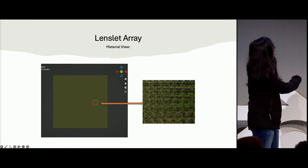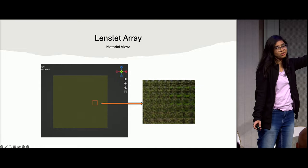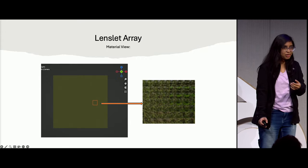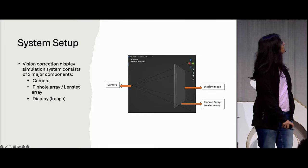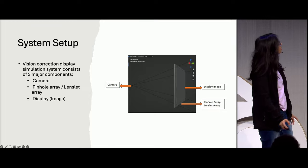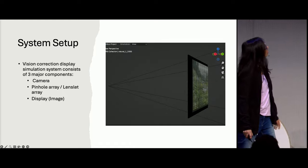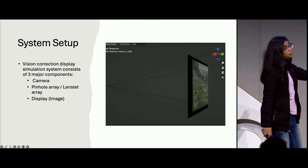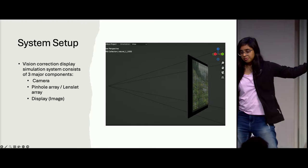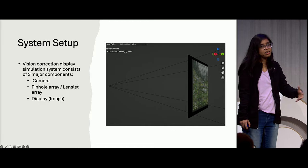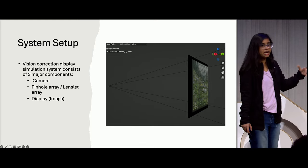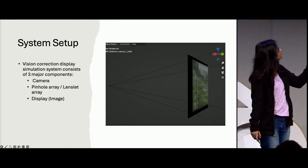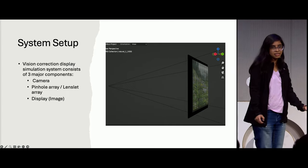This is how the final lenslet array looks — very closely packed micro lenses of 500 micrometer length, which makes physical production very costly. The entire system setup has three components: camera, pinhole or lenslet array, and the display image. We give the pre-filtered image, processed earlier by the software, to be viewed by the camera. The camera is defocused, with focus manually set and all parameters adjusted according to our needs.